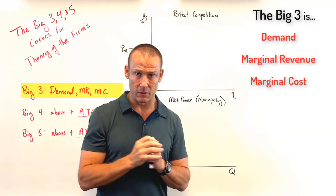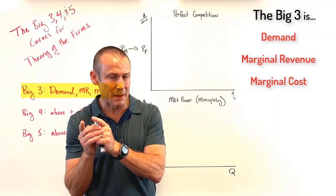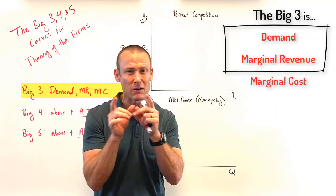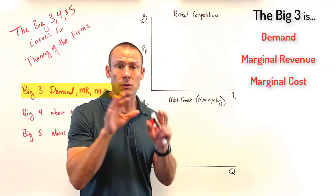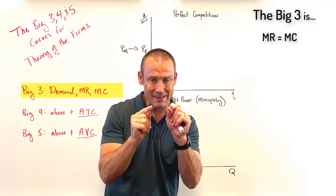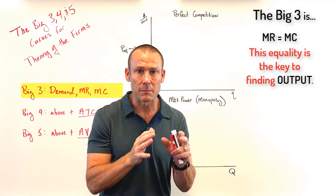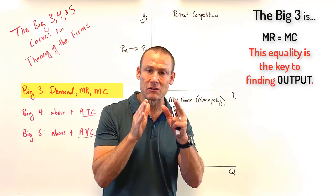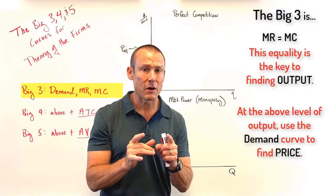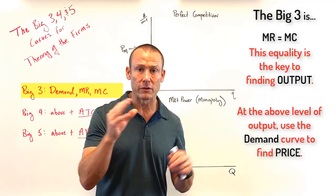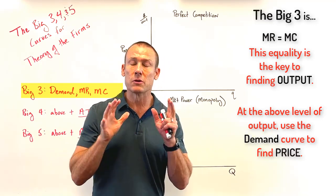The big three is Demand, MR, and MC. I say it in that order because to find the MR curve you need the demand curve first. Then MR and MC — that intersection point finds your output. That is the key: profit-maximizing output or loss-minimizing output is MR = MC. Once you have output, head to your demand curve to find price. So the big three find price and output for a firm.